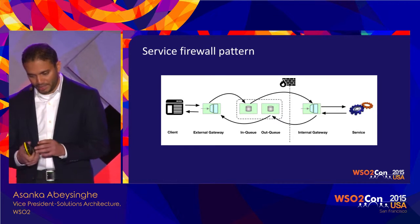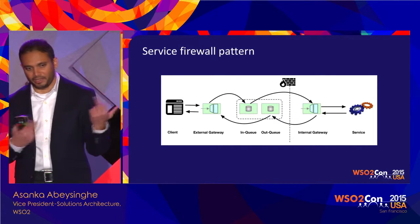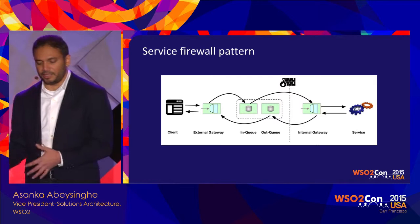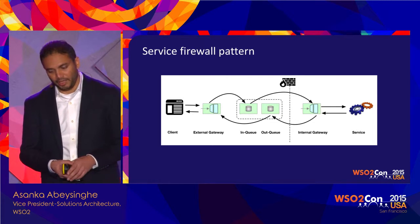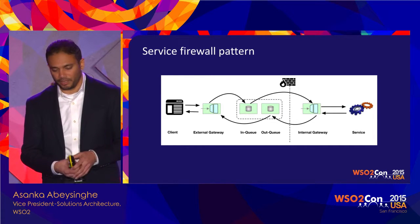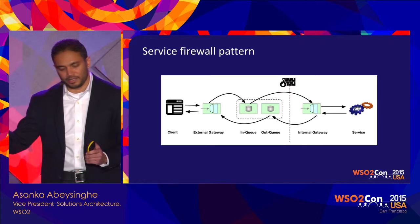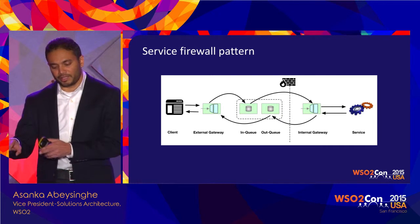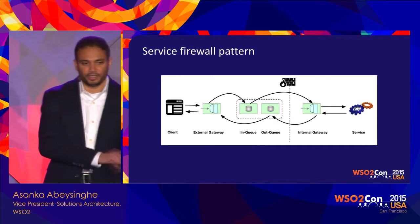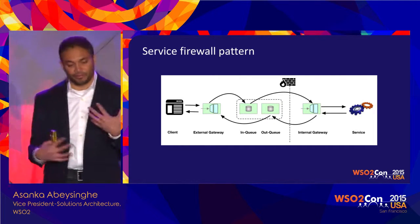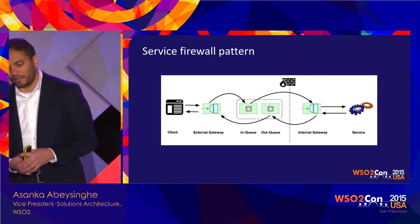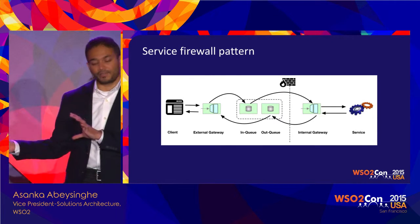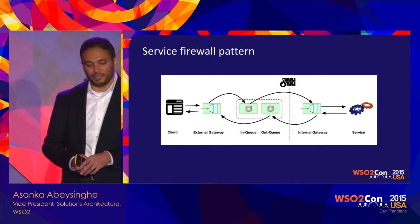As an example, we created a 'service firewall pattern' for a customer whose data center had a one-way firewall. We placed a message broker in the DMZ — incoming messages go to an inbound queue; an internal gateway subscribes and pulls messages into the LAN. For responses, the internal gateway puts messages on an outbound queue and the external gateway subscribes and delivers them to the consumer. It's not high-performance but met their throughput and latency requirements perfectly without changing any existing infrastructure policies.